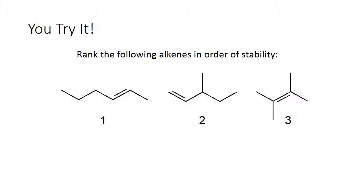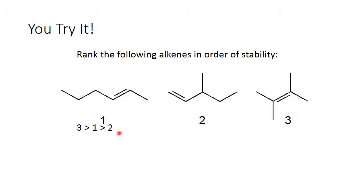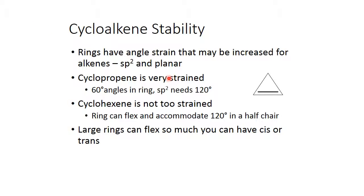Go ahead and try this problem: rank the following alkenes in order of stability. The numbers shown are just labels, not the order of stability. Looking at the compounds: one is disubstituted, one is monosubstituted, and one is tetrasubstituted. The tetrasubstituted is the most stable and the monosubstituted is the least stable, so the order of stability is 3, 1, 2.